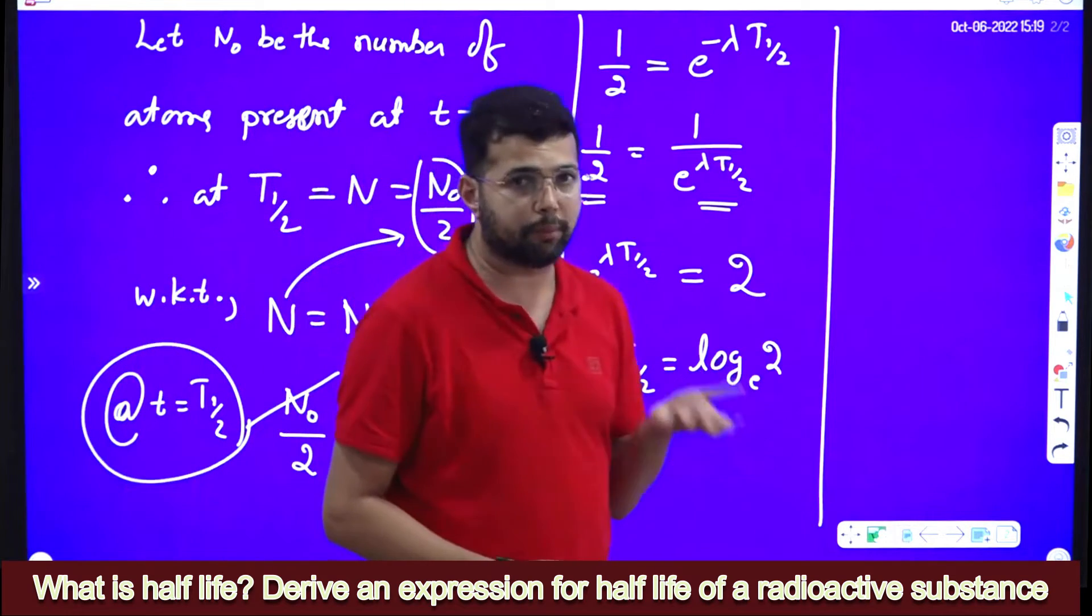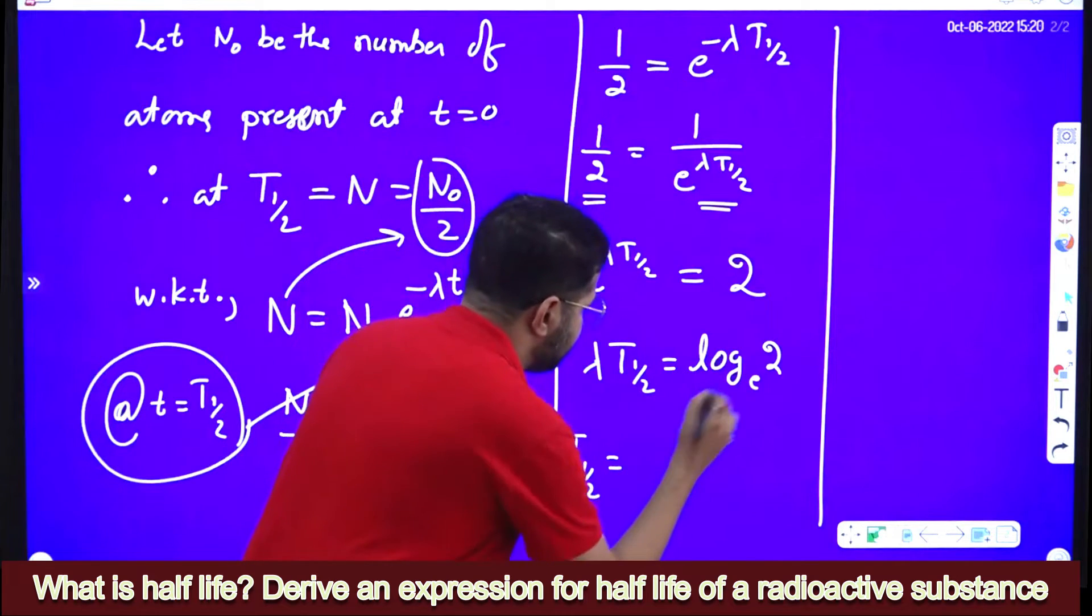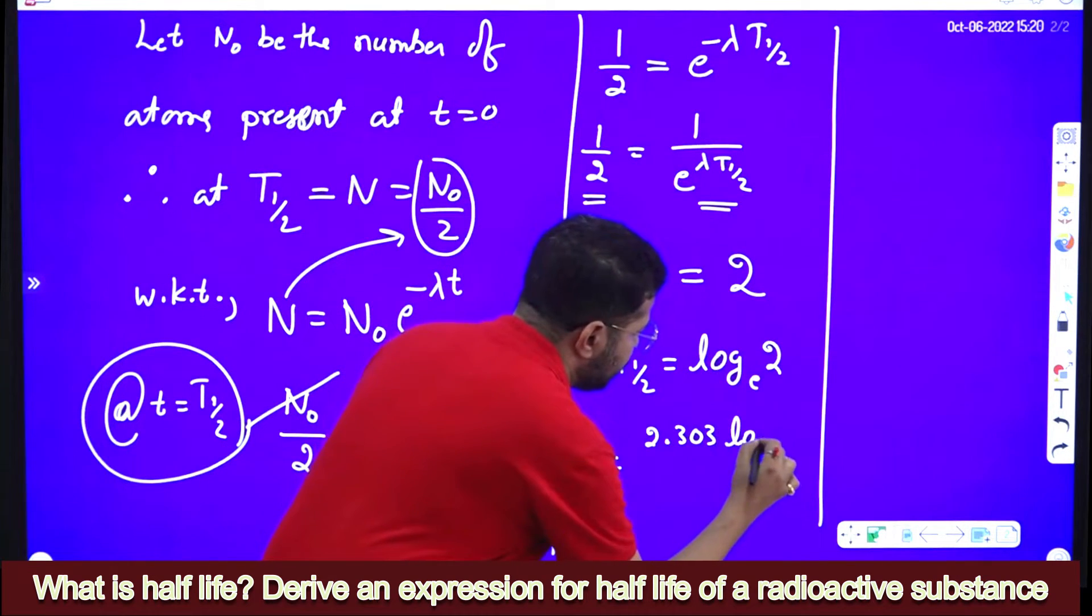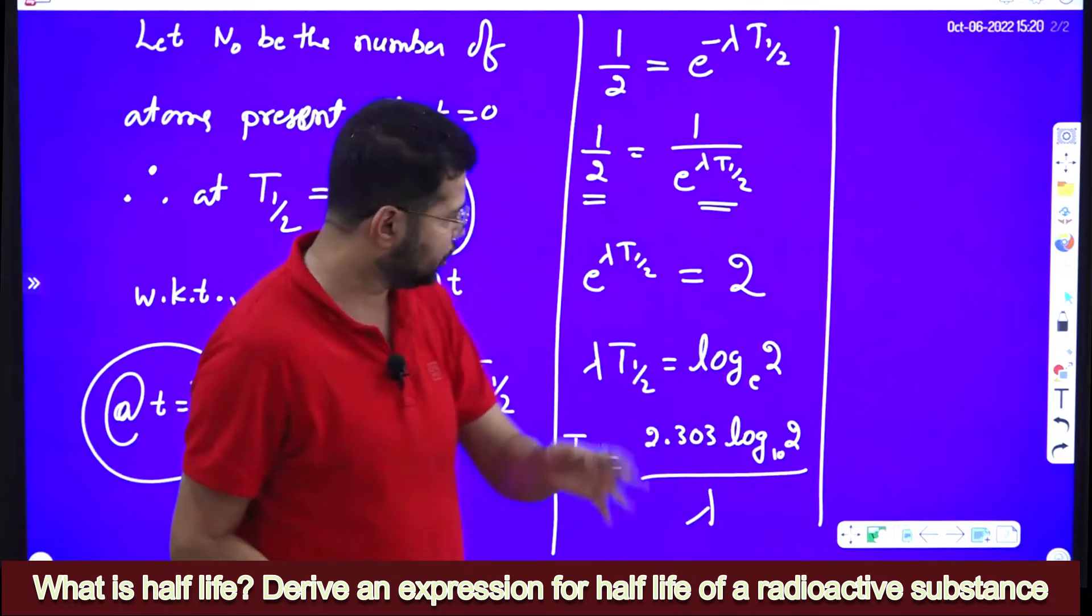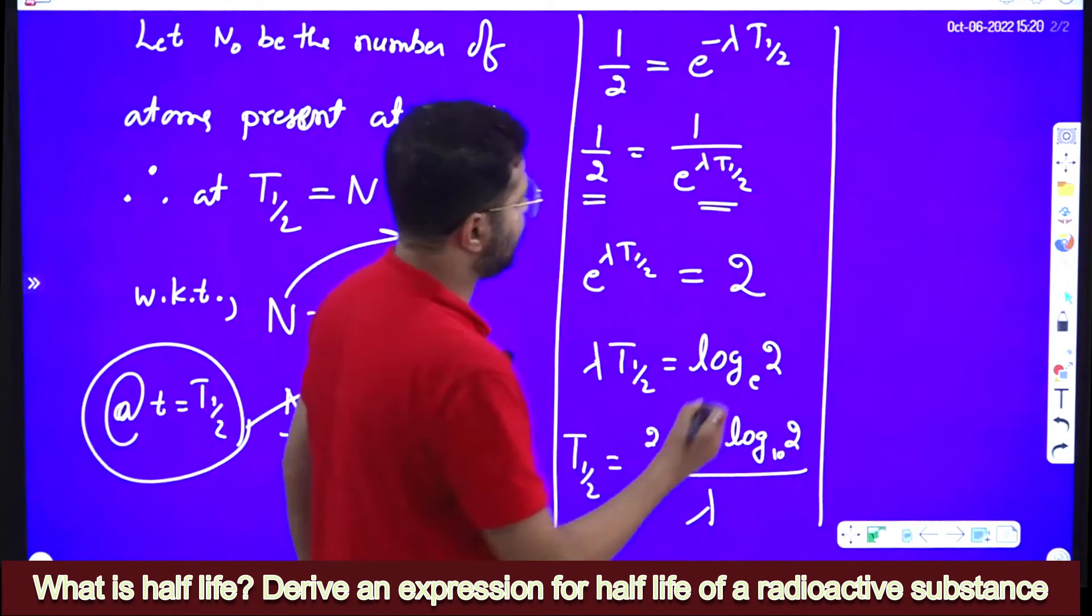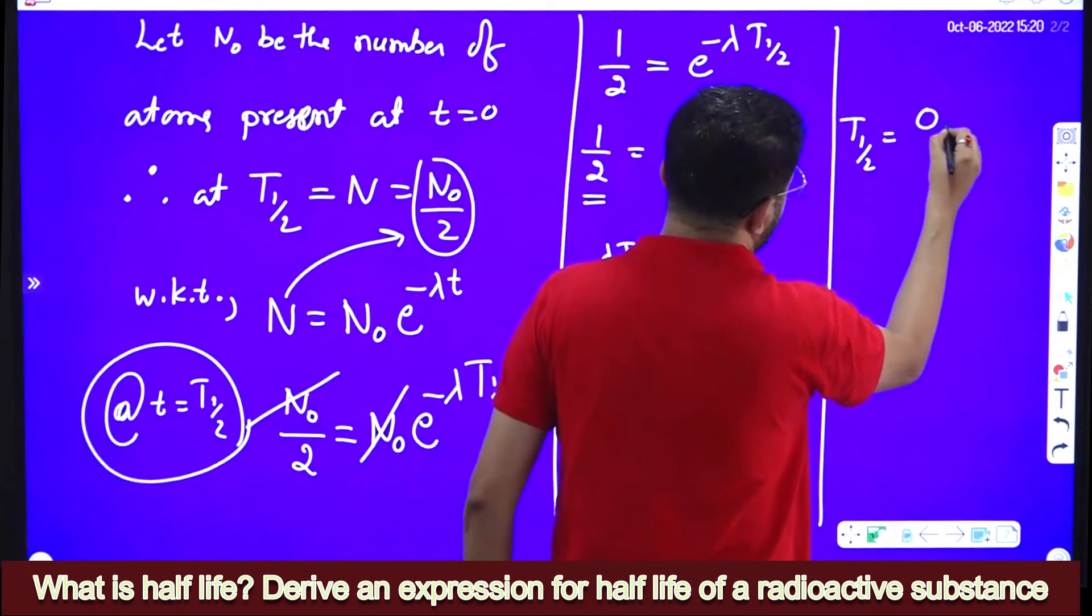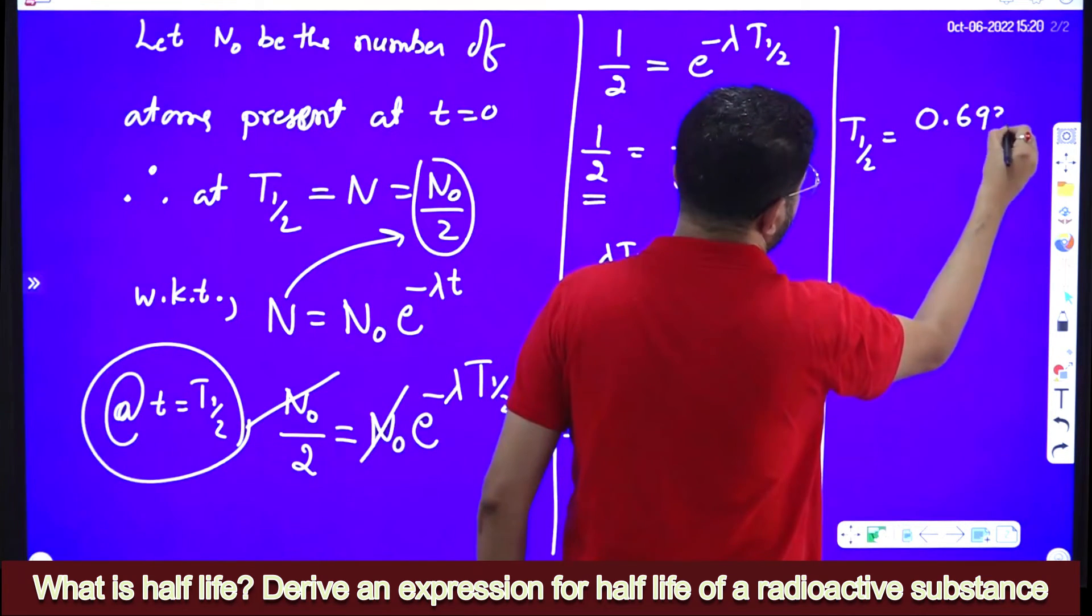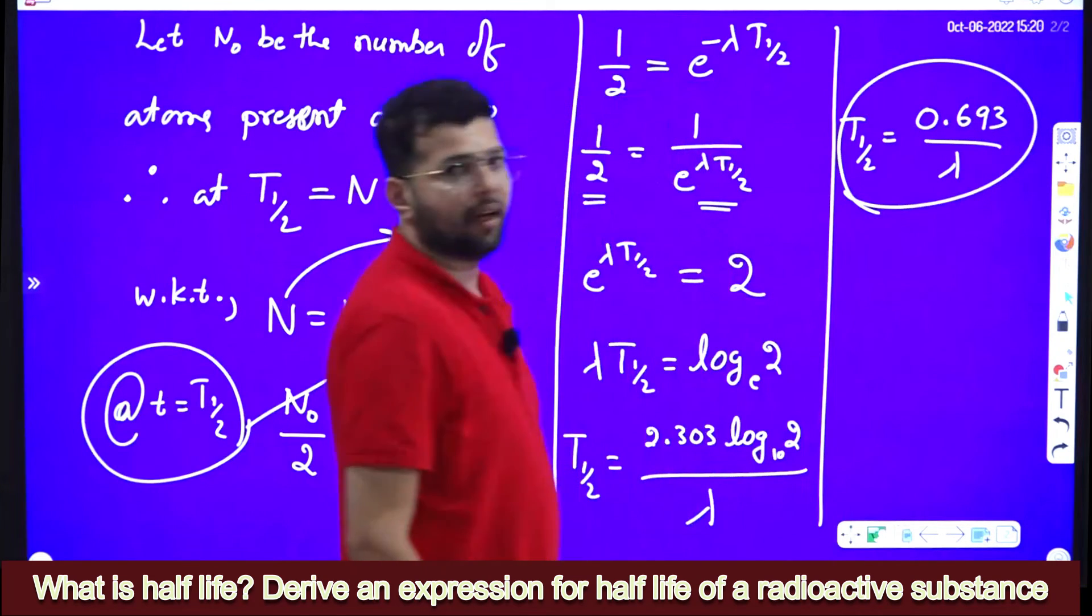How to convert log 2 into log to the base 10? Multiply it with 2.303. What happens? 2.303 into log 2 to the base 10 divided by lambda. But we know the value of log 2, log 2 means what? 0.3010. Multiply it by this, what happens? Finally, we get half-life is equal to 0.693 divided by lambda. So this is the expression for half-life.